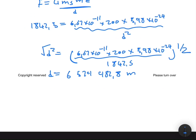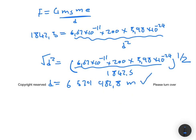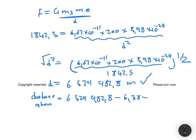This question carries five marks — stopping at the total distance gives only three marks; the remaining two marks require subtracting the Earth's radius. The distance above the Earth's surface equals 6,579,982.8 m minus the Earth's radius, which is 6.38 × 10⁶ m. The final answer is approximately 1.99998 × 10⁵ meters above the Earth's surface.